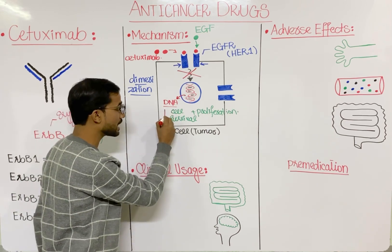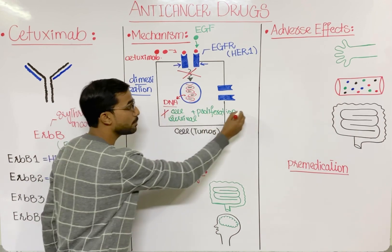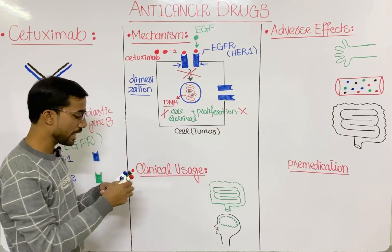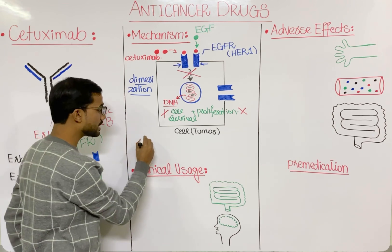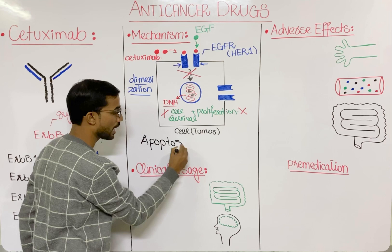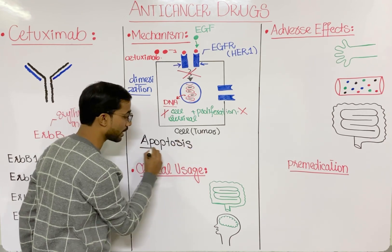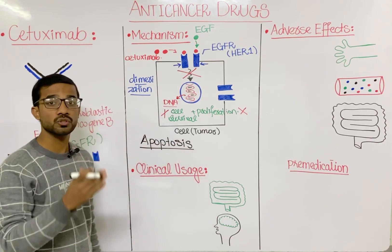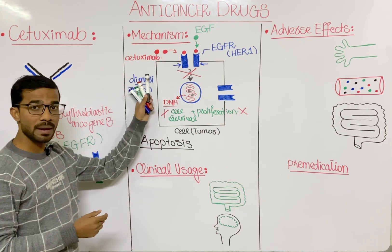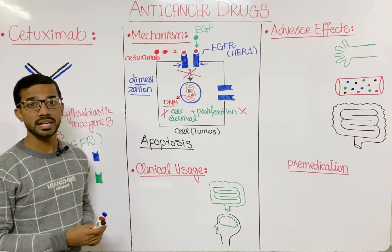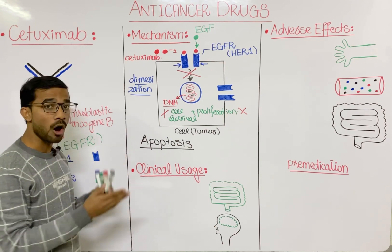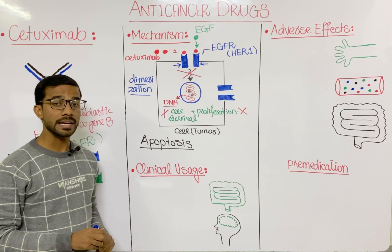When there is no signal transduction, there is no activation of the genes involved in cell survival and proliferation. When there is no proliferation, the cell ultimately goes towards apoptosis — cell death. That is our main target: to destroy the tumor cell. After taking cetuximab, we achieve apoptosis.